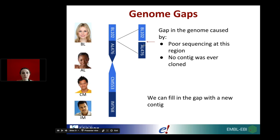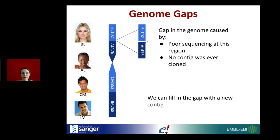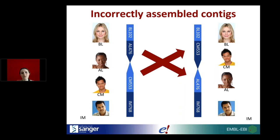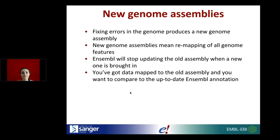Another issue is gaps in the genome — poor sequencing or uncloned regions — which we may want to fill in. Importantly, we don't always know how long a gap is until we've sequenced it. We can also have incorrectly assembled contigs, perhaps where repetitive sequences caused mis-matching. We produce new genome assemblies to fix these errors, which means remapping all genome features. Many fixes change positions and lengths of features, so everything gets new coordinates with a new assembly.